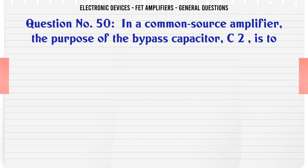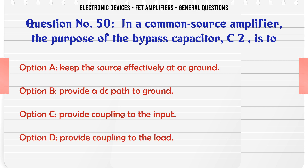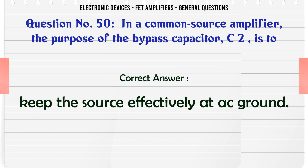In a common source amplifier, the purpose of the bypass capacitor C2 is to: A. Keep the source effectively at AC ground. B. Provide a DC path to ground. C. Provide coupling to the input. D. Provide coupling to the load. The correct answer is keep the source effectively at AC ground.